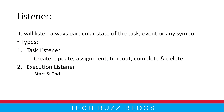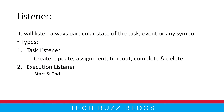So that's the basic understanding about listeners. A listener will always listen for whenever some event is happening. There are two types: task listener and execution listener. For the task listener we can configure for create, update, assignment, timeout, complete, and delete events. But the execution listener can be called only for start and end events.